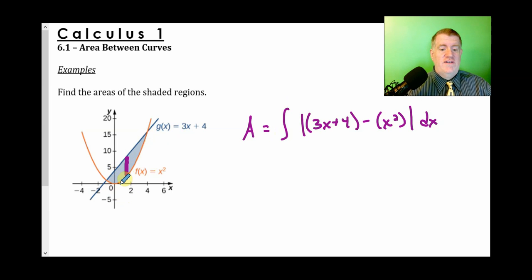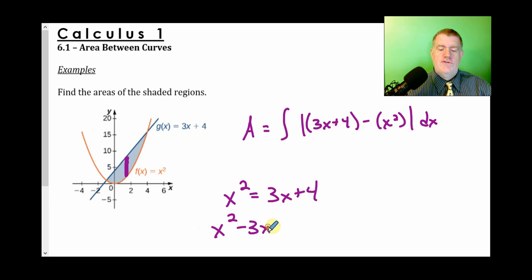Now, the way I see them, the way I always do it, is if I drew, they call this a representing rectangle. It's not really a rectangle. It's a line, but it's supposed to be a rectangle. Can you kind of see how it's perpendicular to the x-axis, and how it hits these two graphs? The blue graph is always on top. The orange graph is always on the bottom. So the blue graph is g of x, which is 3x plus 4. Subtracting the orange graph, which is x squared.